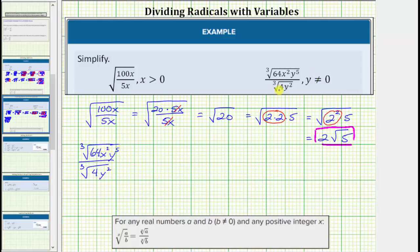So what we'll do in this case is use the radical property shown below in the opposite direction. Notice the property indicates the x root of a divided by the x root of b is equal to the x root of the fraction a over b, which means the quotient of these two cube roots is equal to the cube root of the fraction 64x squared y to the fifth divided by 4y squared.